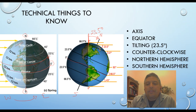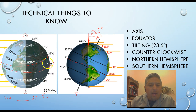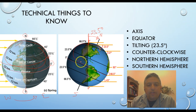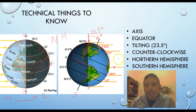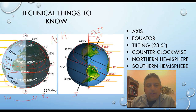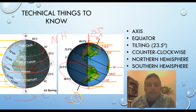And of course the last two terms are the northern and southern hemispheres. Everything above the equator is considered the northern hemisphere — those sections that I'm pointing at right now. The southern hemisphere is everything that is below the equator, below the zero degrees — that is considered the southern hemisphere.